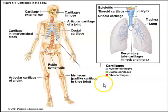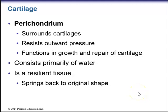Some general characteristics of cartilage: we have the perichondrium, which surrounds cartilages, helps resist outward pressure, and functions in growth and repair of cartilage. It consists primarily of water and is a very resilient tissue that springs back to its original shape.